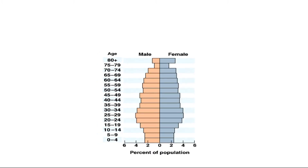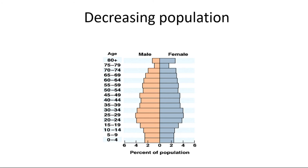The age pyramid seen in this figure is indicative of a decrease in population. A significant percent of the population falls in the older age classes and a smaller percent is seen within the younger age classes. This tells you that the birth rate is low, and a low birth rate indicates an overall decrease in population.